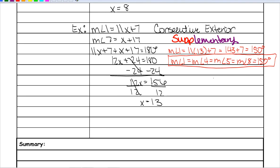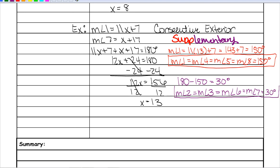For the other angles you can either subtract 150 from 180 to get 30, or plug 13 into the expression for angle 7: 13 plus 17 is also 30. Either way works — I prefer to subtract from 180. So the measure of angle 2 equals angle 3 equals angle 6 equals angle 7, all equal to 30 degrees.